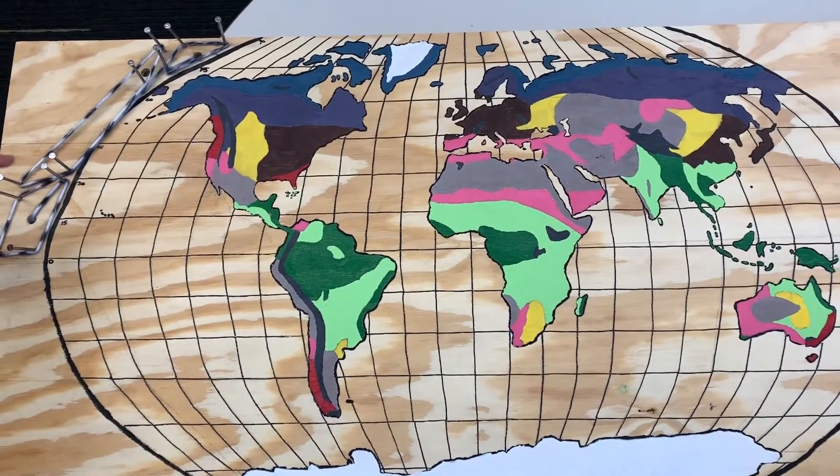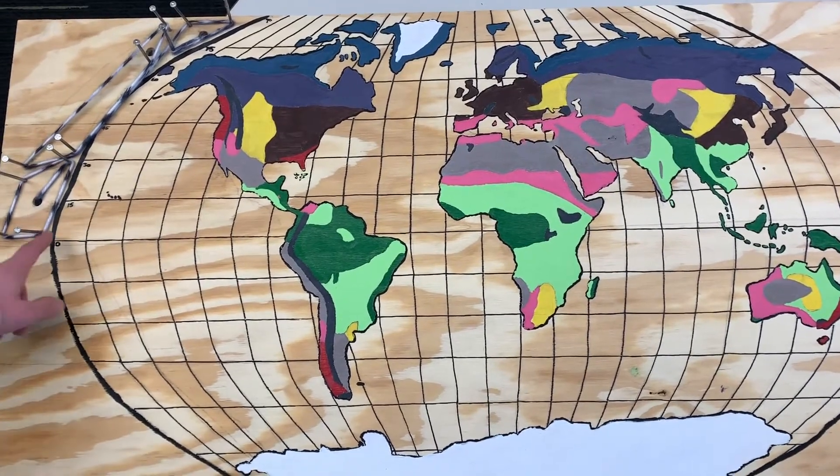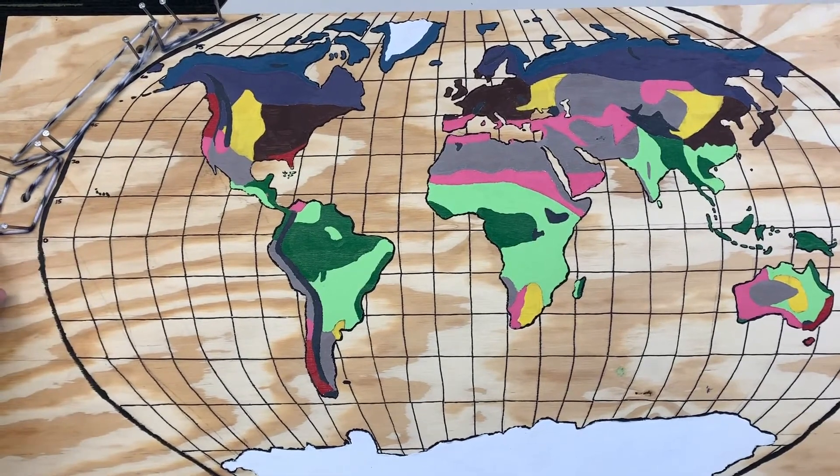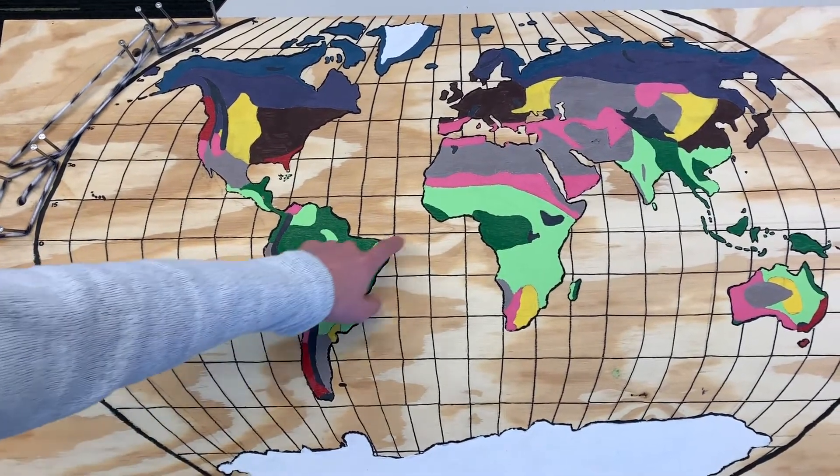They create convection currents of air in our atmosphere. You have the Hadley cell from about zero degrees latitude to 30 degrees latitude where you move these areas of low pressure up and you have tons of rainfall around the equator.